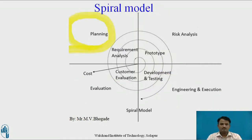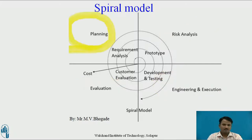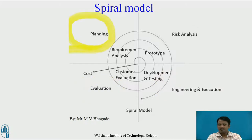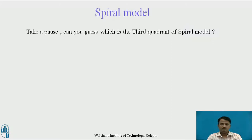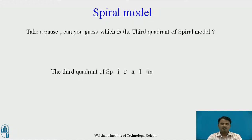This is the diagram for the Spiral Model. Here we can see the four quadrants: Planning, Risk Analysis, Engineering and Execution, and Evaluation. The third quadrant of the spiral model is Engineering and Execution.